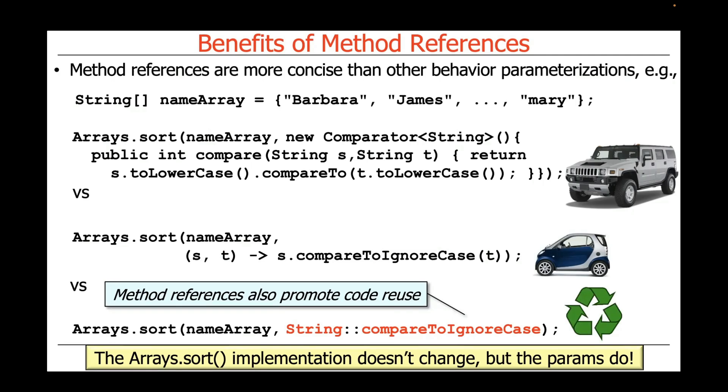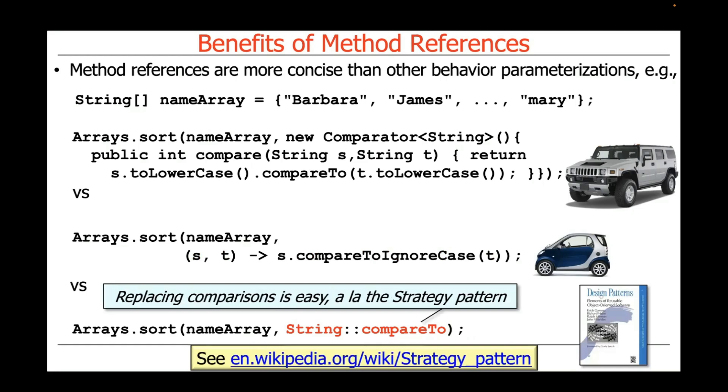Method references are also useful in promoting code reuse. For example, you can see here that the arrays sort implementation needn't change, only the parameter that does the comparison. So that's a nice example of behavior parameterization. That's very concise and compact. Moreover, we can change these comparisons in a trivial way using the gang of four strategy pattern.